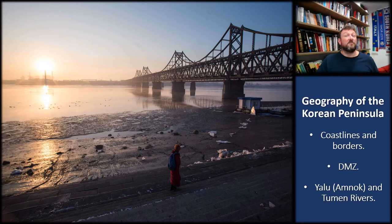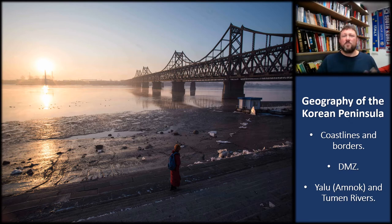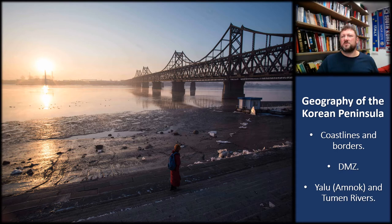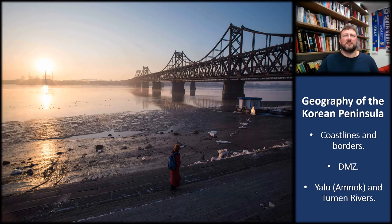A state's borders are often defined by prominent land features related to topography. We discovered in an earlier video that the DMZ border with South Korea is not related to topography — it's an artificial creation, as many borders are. However, some of North Korea's borders are related to topography. Looking north to North Korea's frontier with China, the border follows the Yalu and Tumen rivers, which both flow in opposite directions from the slopes of the large volcanic crater lake of Mount Paektu. This picture illustrates a sunrise over the Yalu River — the Amnok River as it's called in Korea — looking east from the Chinese side at Dandong.